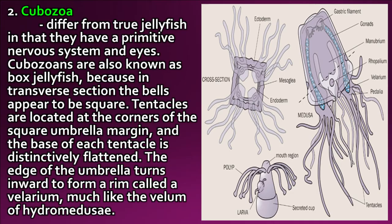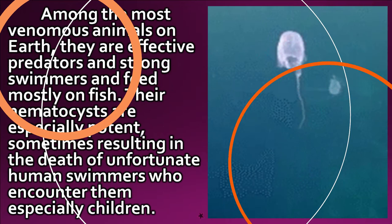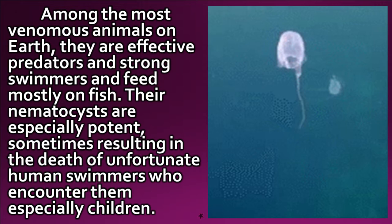Among the most venomous animals on earth, cubozoans are effective predators and strong swimmers and feed mostly on fish. Their nematocysts are especially potent, sometimes resulting in the death of unfortunate human swimmers who encounter them, especially children.